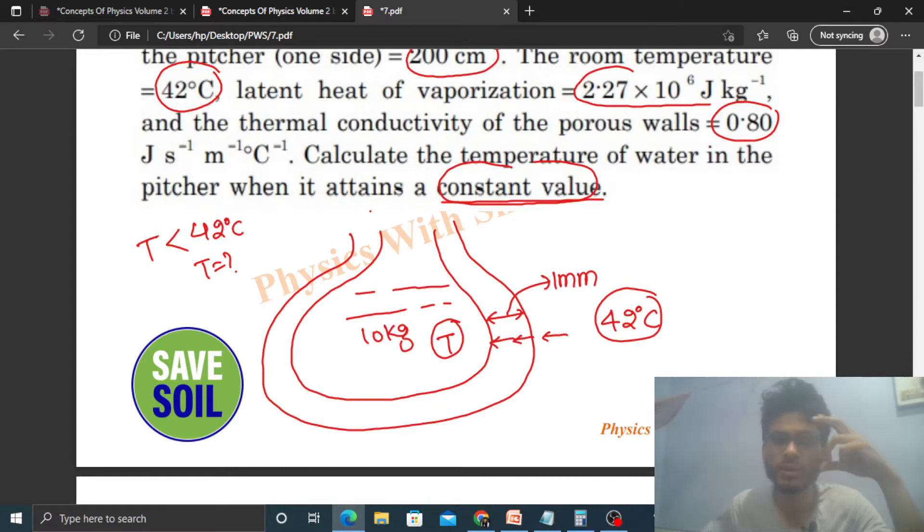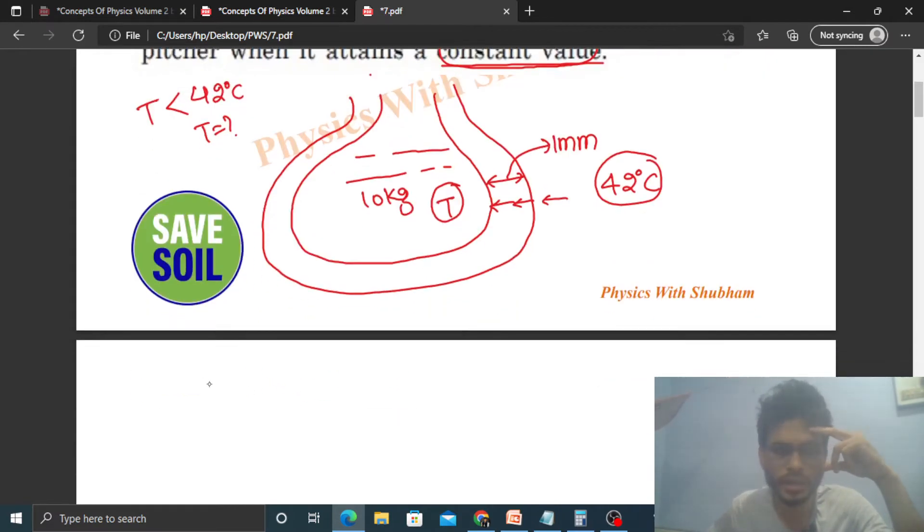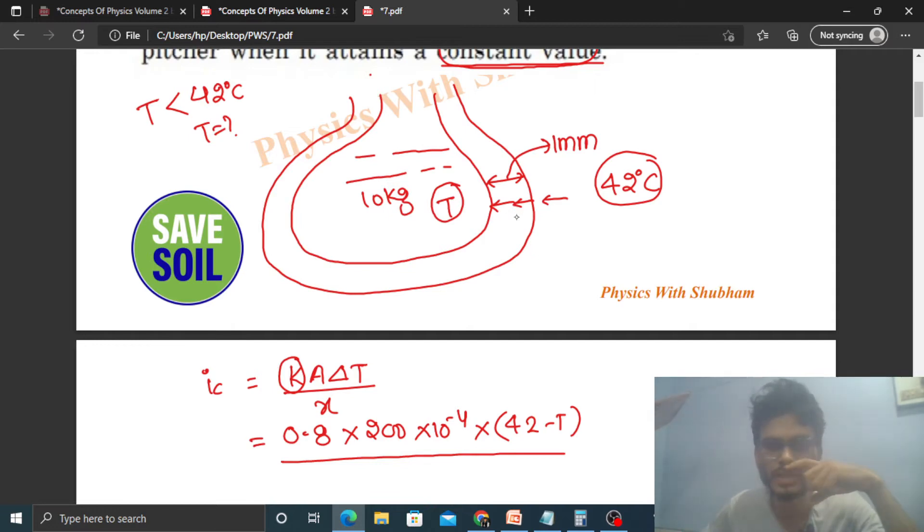Can you find out the heat current? Heat current will be i = KA delta T divided by x. Just put the values. K is thermal conductivity, value given is 0.8. The cross-sectional area of this pitcher is 200 centimeter square, so 200 into 10 raise to the power minus 4 meter square. The temperature difference is 42 minus T.